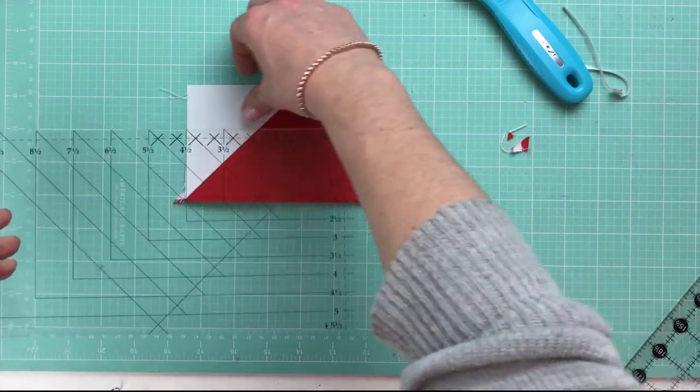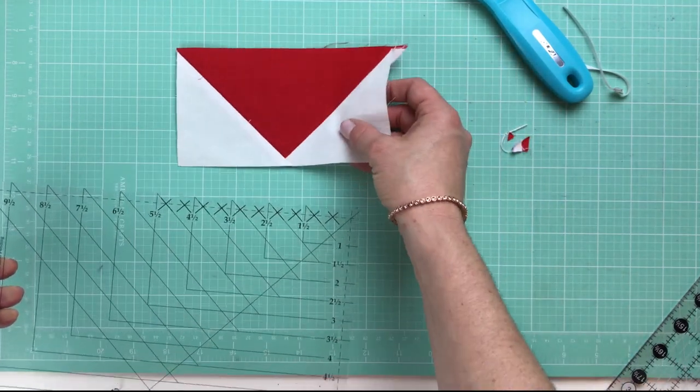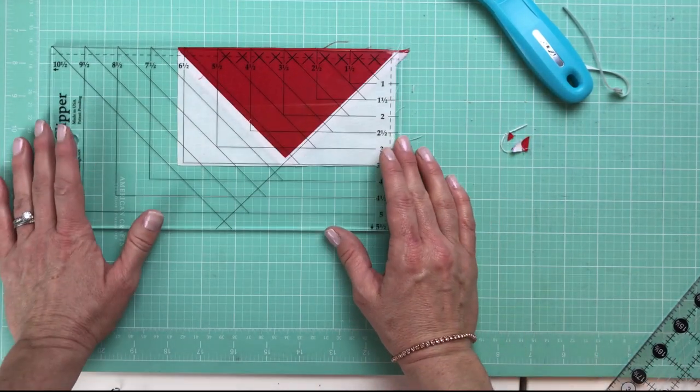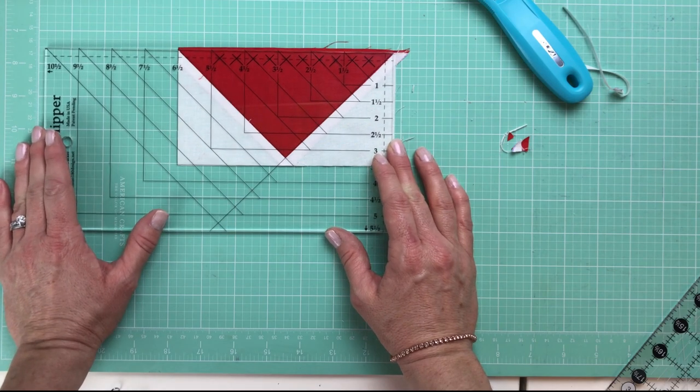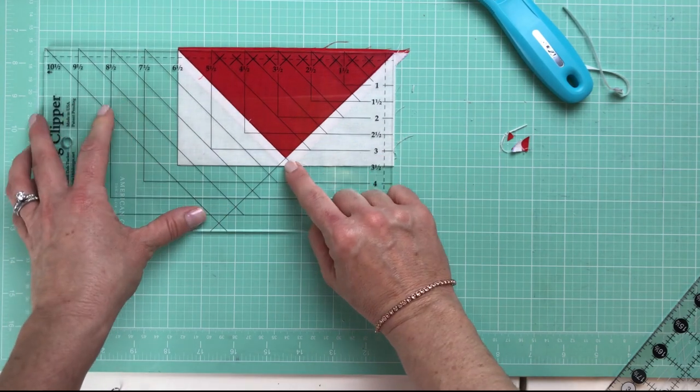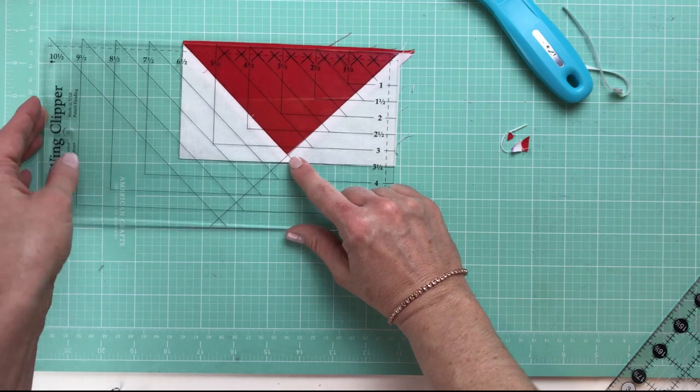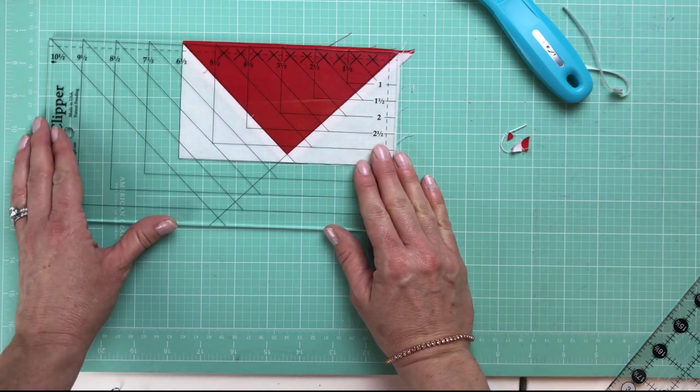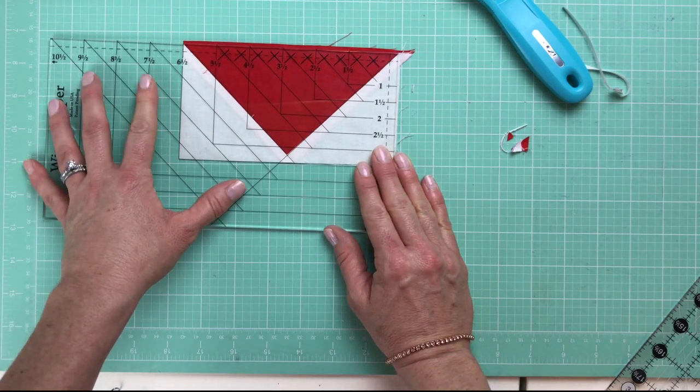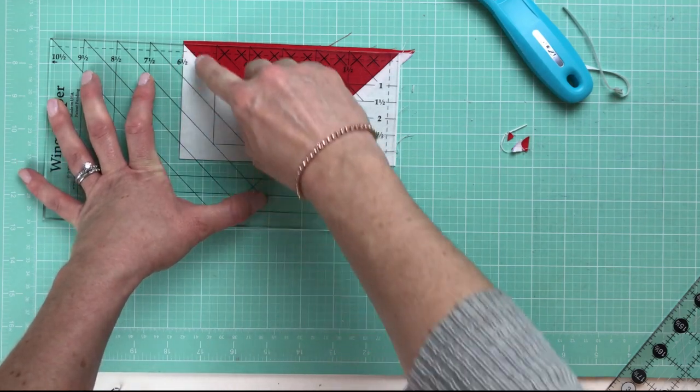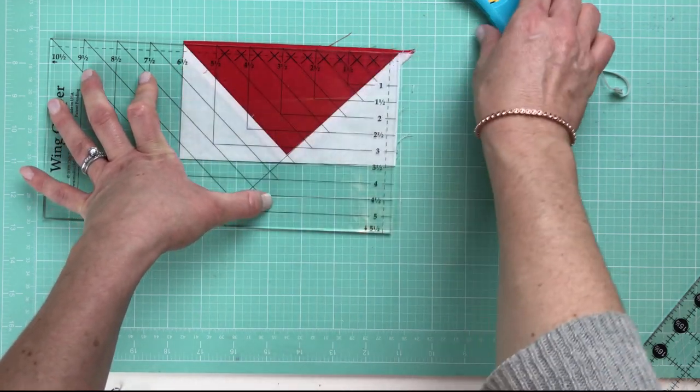And then we are going to flip around, and this time we have another little tool that they give you on the ruler. At this end, there's another intersection. So now we're going to put our tip right there, and we're going to line up our diagonal lines. Look, we're beautifully at 6½ inches on that side.